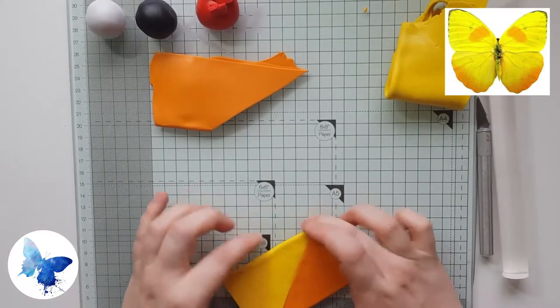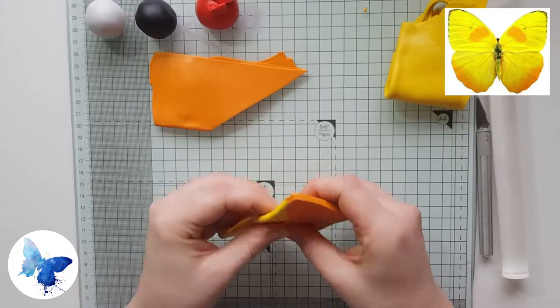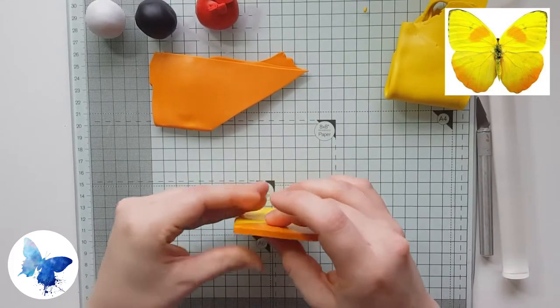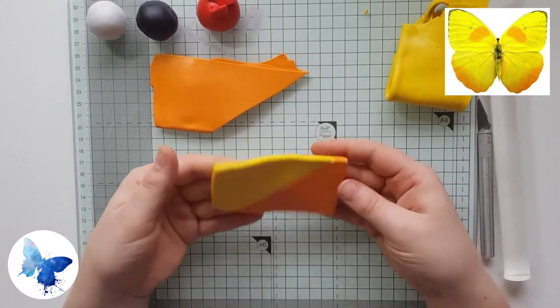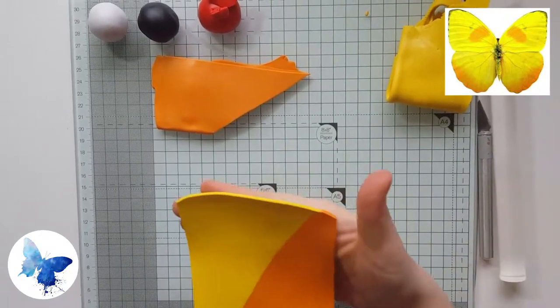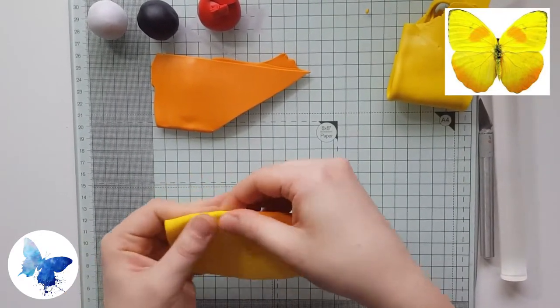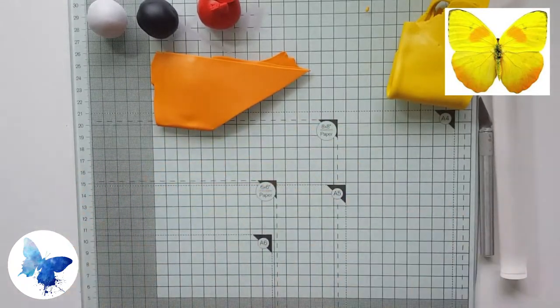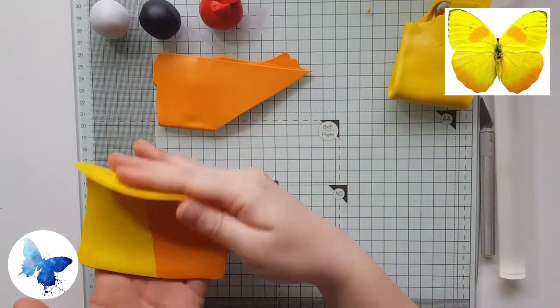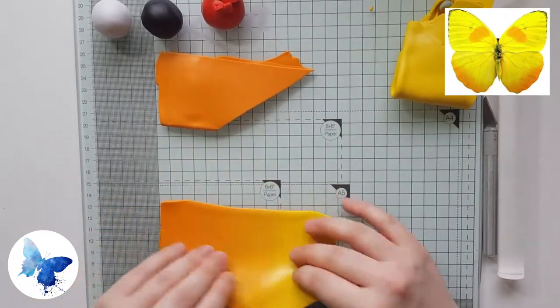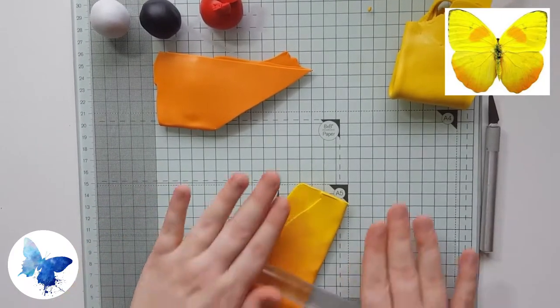You need to really push the two colors together so that when you put them through the pasta machine they don't come apart. Once you're happy that they're stuck together reasonably firmly you want to put it through the pasta machine on your thicker setting before folding from top to bottom and putting it through the folded side down the pasta machine. Eventually this will create a really nice blend from yellow to orange.